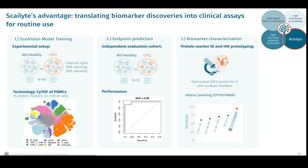Our data scientists split the data of the initial discovery cohort into 70% for training and 30% for the development dataset, and identified cells and protein signatures allowing highly specific and sensitive detection of CTCL. This discovery was validated on a separate cohort of 33 patients and was able to diagnose CTCL patients with an AUC of 0.98.